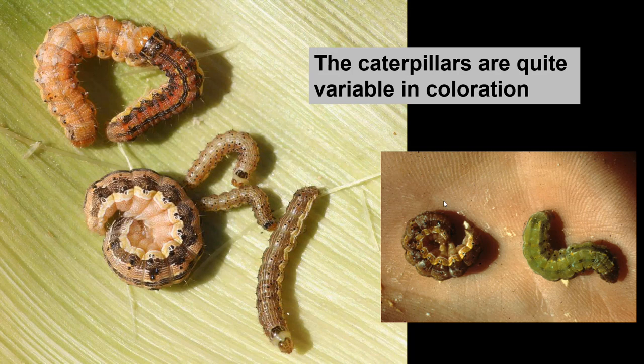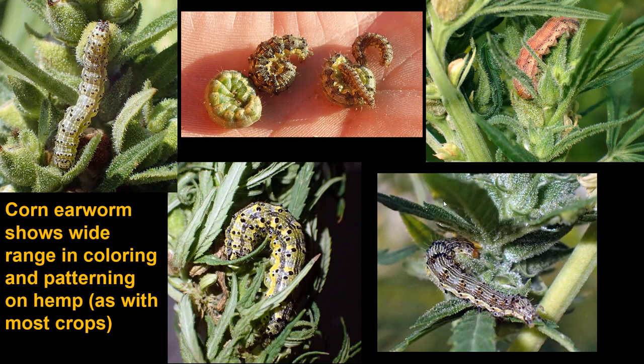The caterpillars on any crop are going to be highly variable. This insect may be very pale, green, nearly black, or have reds — this is all corn earworm. These are caterpillars that came out of one batch of sweet corn. Similarly, in hemp this insect is highly variable, showing a wide range of colors and patterns. These are all corn earworm taken out of hemp in Colorado.